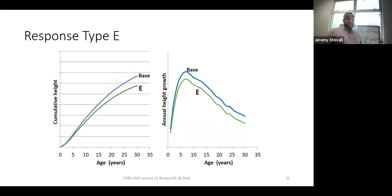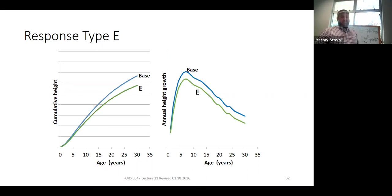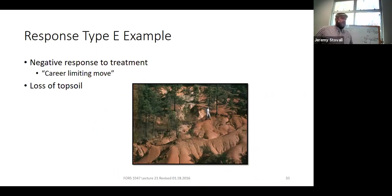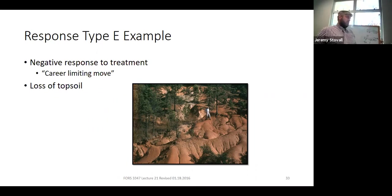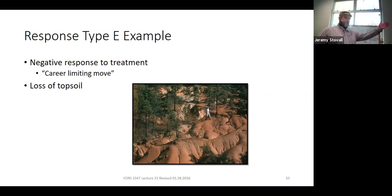A Type E growth response is where the treated stand is always worse than the untreated stand — a treatment that backfired completely. There aren't standard silvicultural treatments that cause this, but examples include mismanaging highly erodible soils, leading to severe gully erosion after a clearcut, or an unreclaimed strip mine site where the mining company went bankrupt before reclamation. The federal government now requires bonds under SMCRA to fund reclamation if that occurs, but historically it has happened.